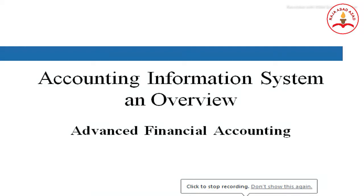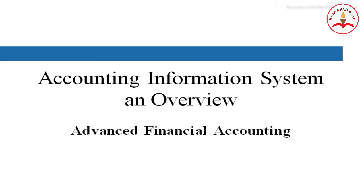Today we discuss the accounting information system — an overview of what the main accounting information systems are and which are used in business organizations. Organizations depend on information systems to stay competitive; information is just as much a resource as plant and equipment. An accounting information system is a collection of resources — such as people and equipment — designed to transform financial and other data into information, communicated to a wide variety of decision makers, whether through manual or computerized systems.